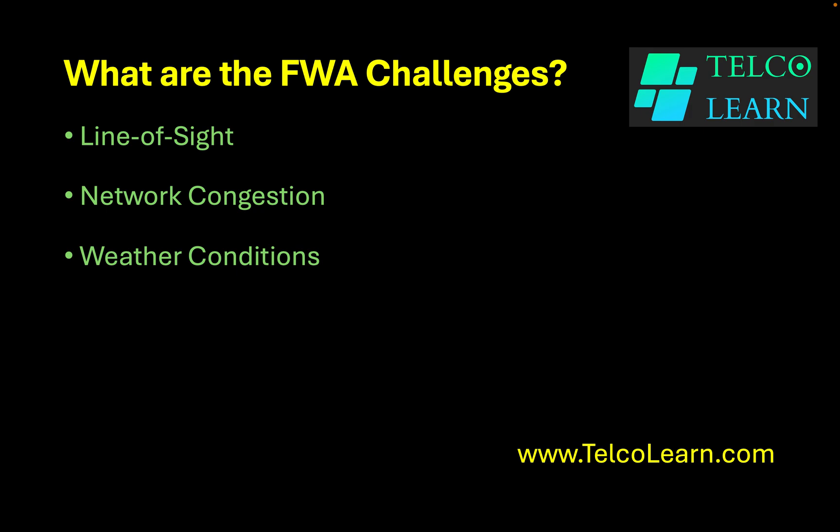However, FWA also comes with challenges. Mostly because when we are in poor conditions, we would require line-of-sight communication, and if line-of-sight is not available it may disturb some of our connections. Whenever networks are getting congested, FWA is also going to face those challenges, so the data rates we commit to the end user may not be fulfillable, unlike wired networks such as fiber cable.